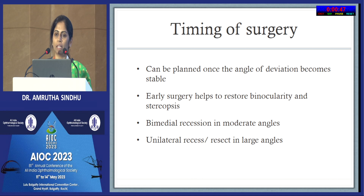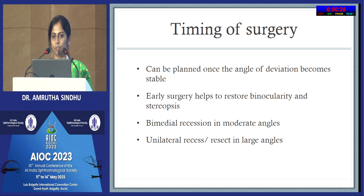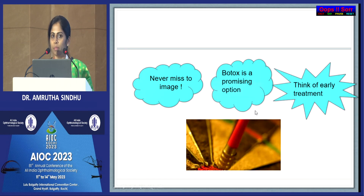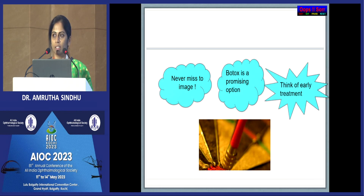Moving on to surgery: we need not wait six months as with other protocols. We can plan earlier surgery once we get a stable deviation, because early surgery helps restore binocularity and stereopsis. For moderate angles, bimedial recession can be planned; for larger angles, a unilateral recess-resect procedure. For six nerve palsies, some mild cases recover their paresis but leave residual esotropia - look for a V pattern which suggests a recovered lateral rectus paresis. To conclude: never miss imaging any case of acute esotropia; botulinum toxin is a promising option; early treatment, whether botulinum toxin or surgery, gives the best results.